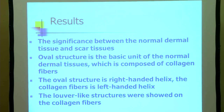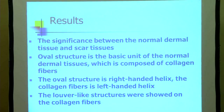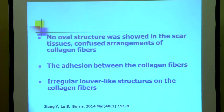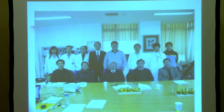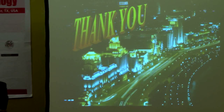The woven arch structures form the basic unit of normal dermal tissue, composed of collagen fibers. The arch structures are right-handed helices while the collagen fibers are left-handed helices, and ladder-like structures were observed on the collagen fibers. In scar tissue, there is no arch structure, and there is severe adhesion between collagen fibers. Although ladder-like structures are visible in scar tissue, they are irregular. In the future, we will further pursue this research direction to find ideal skin tissue engineering approaches to prevent scar formation. Thank you for your attention.